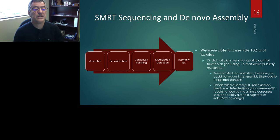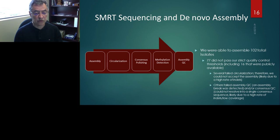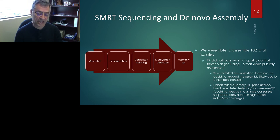This is our pipeline for how we use PacBio. We have a pipeline that performs de novo assembly, circularization, consensus polishing, methylation detection, and assembly QC. This pipeline not only assembles genomes de novo — giving us a full view including repeat regions and high GC content areas — but we also assemble the methylome and are able to assess epigenetic changes that may be associated with certain phenotypes.